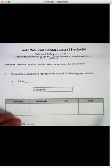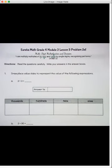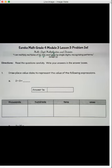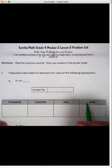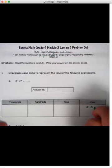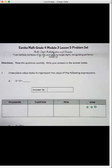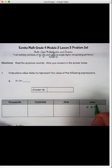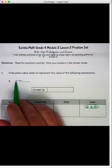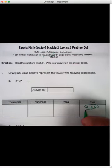This first one says, draw this to represent the value of the following expressions. So this first one, we have this very simple multiplication problem, 2 times 3. So what we're going to do is we're going to draw 3, and that would be three 1s. 1, 2, 3. So there's one group of 3 ones, but it wants us to show 2 times that many. Two groups of 3 ones. 1, 2, 3.